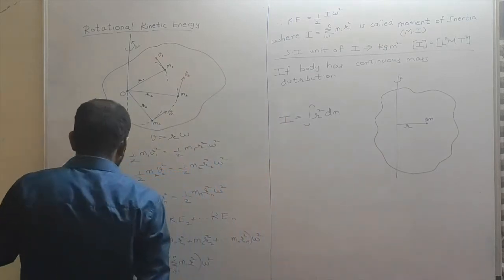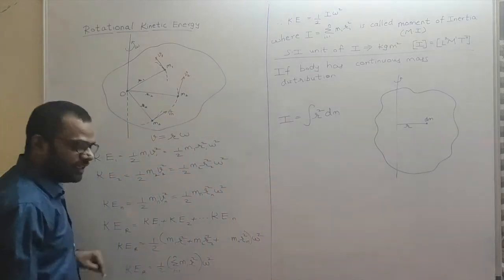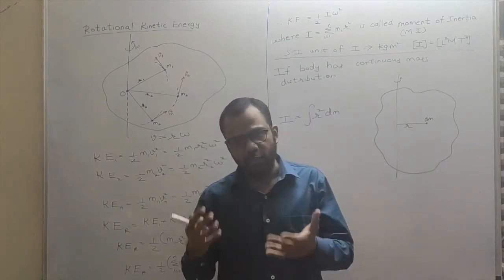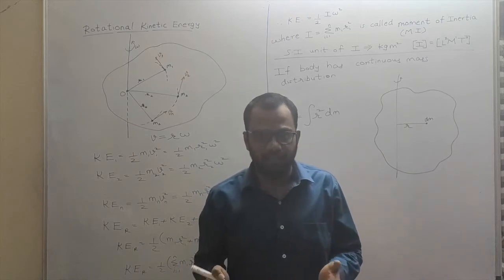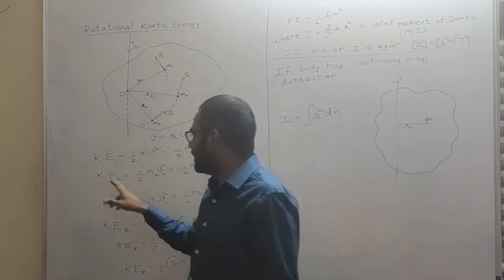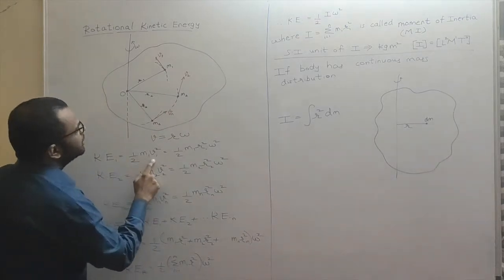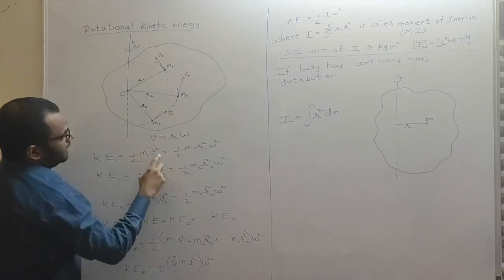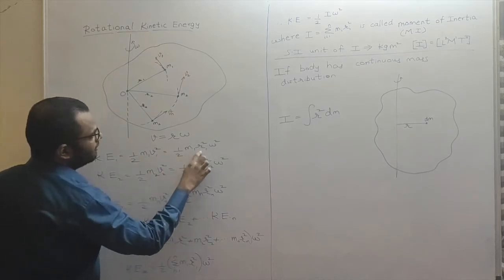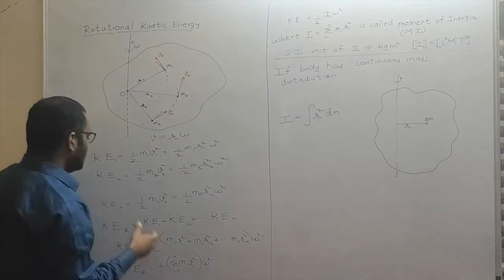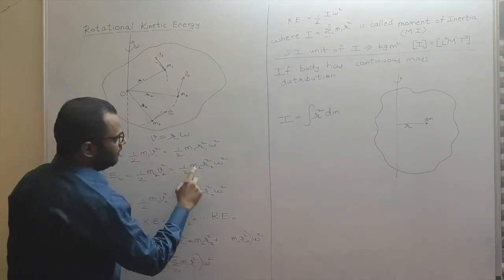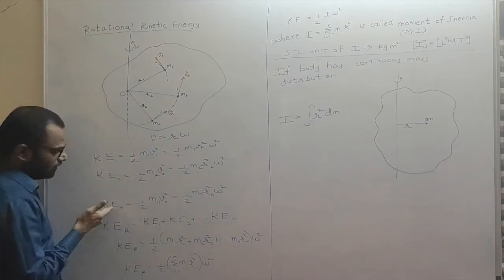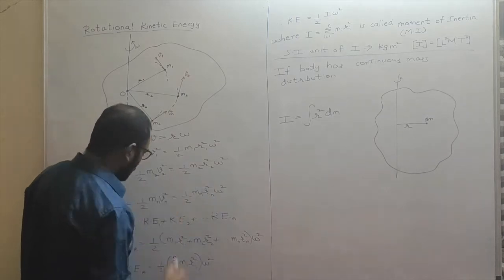Now what we do is take the kinetic energy of each particle and add those kinetic energies together — then we will get the rotational kinetic energy. Kinetic energy of the first particle will be ½m1v1², where v1 is its linear velocity. Since v = rω, it will be ½m1r1²ω². Similarly, kinetic energy of the second particle will be ½m2r2²ω², and of the nth particle will be ½mnrn²ω².